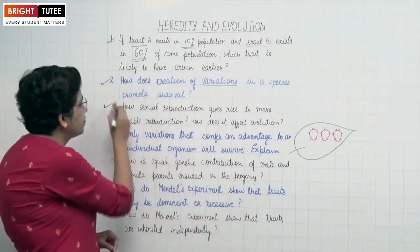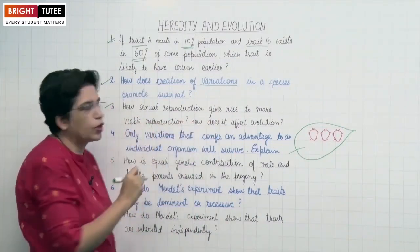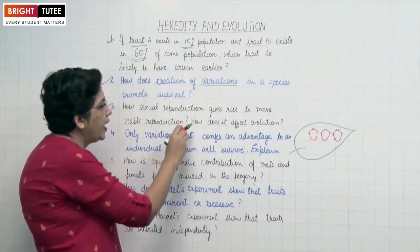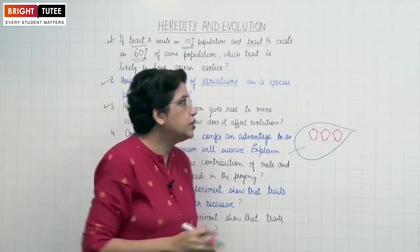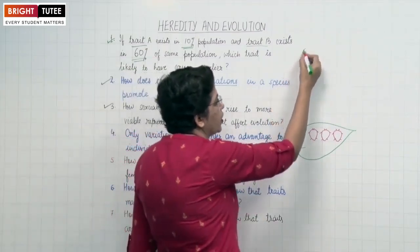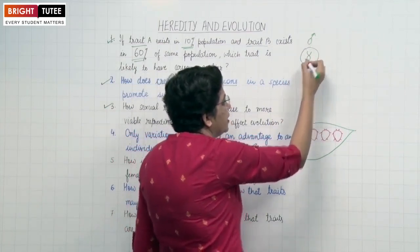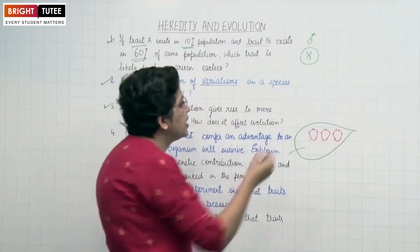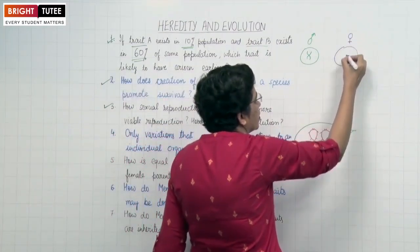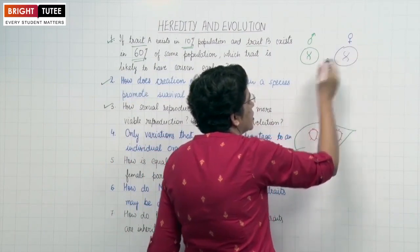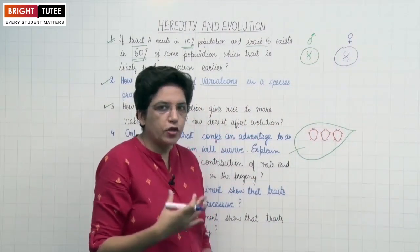Next question: How does sexual reproduction give rise to more viable reproduction and how does it affect evolution? During sexual reproduction, a female cell and a male cell are involved. Firstly, meiosis takes place.